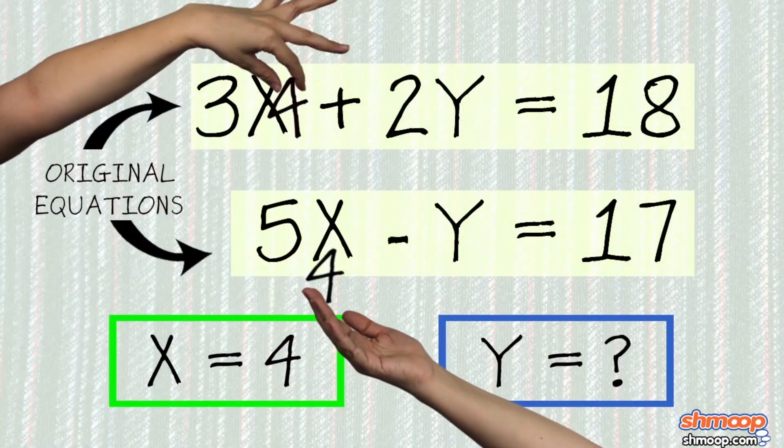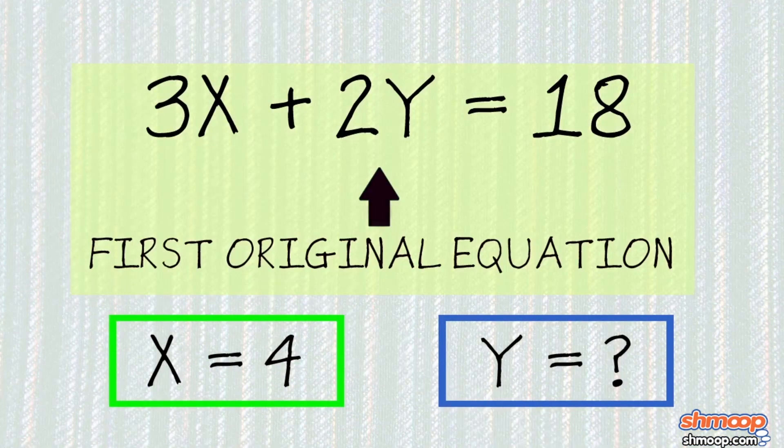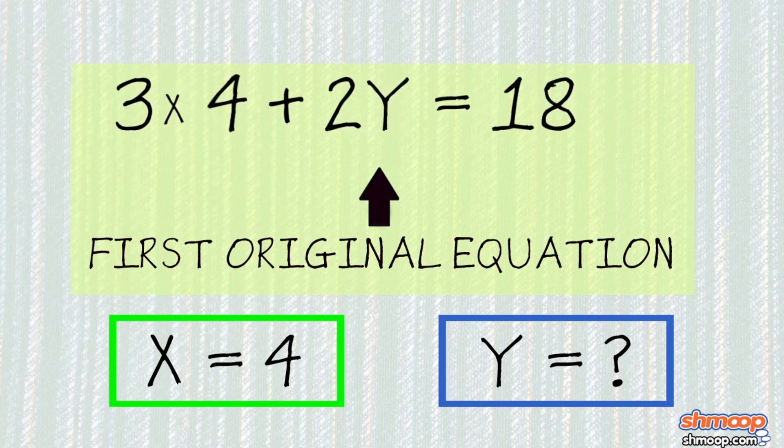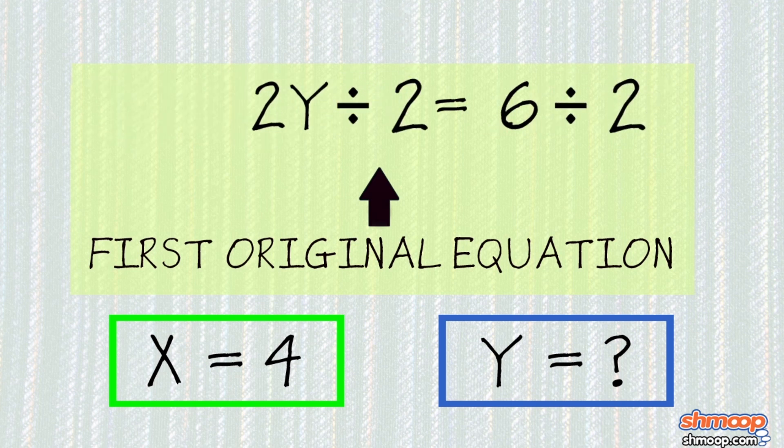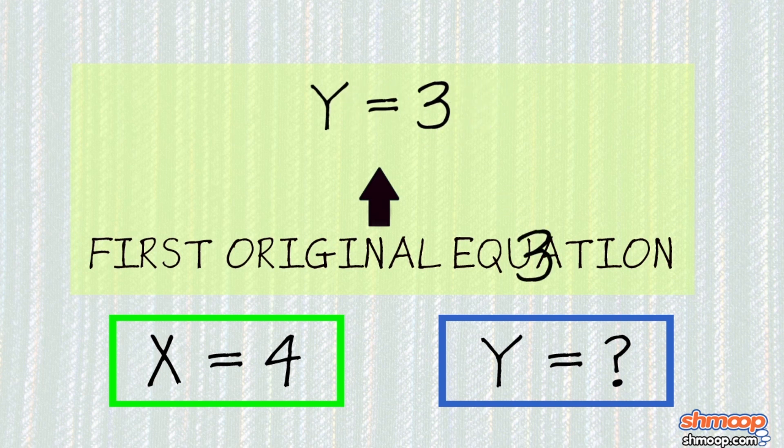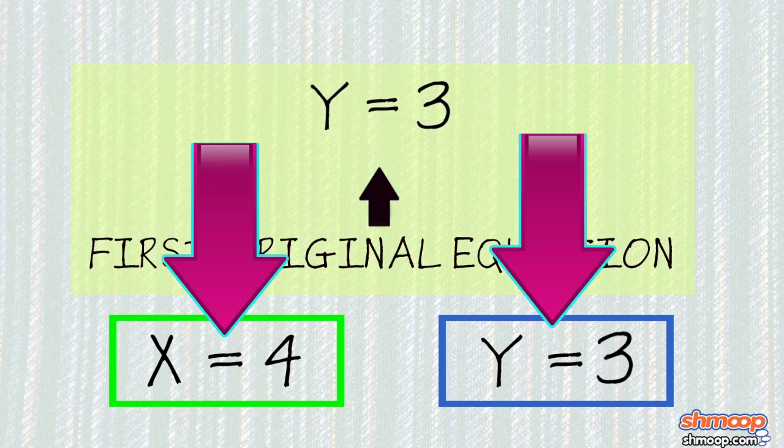Boom. So, we can plug 4 into the x term in either equation to get the value of the y term. 3 times 4 plus 2y equals 18. So, 12 plus 2y equals 18. Drag 12 from both sides, then 2y equals 6. Divide both sides by 2, and y equals 3. Just like that, we've solved our system of equations.